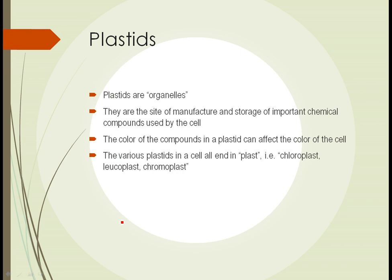Chloroplasts are a type of plastid. A plastid is an organelle — not a full organ like a leaf or stem, but something that exists within cells. Plastids are sites of manufacture and storage of chemical compounds that the plant uses. The color of the compounds inside the plastid can affect the color of the plant cell and ultimately the entire plant. The various plastids in a plant cell all end in '-plast,' such as chloroplast, leukoplast, or chromoplast.